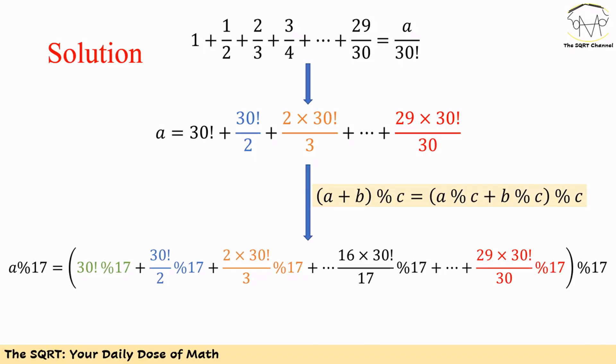We want to find a mod 17, so let's apply the mod operator on both sides. On the left-hand side we have a mod 17, and on the right-hand side we need to apply mod 17 for each term. This results in 30 factorial mod 17, plus 30 factorial over 2 mod 17, and so on up to 29 times 30 factorial over 30 mod 17, with one final mod 17 applied at the end.